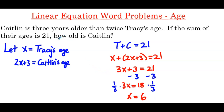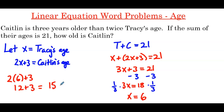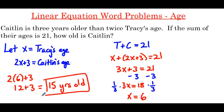Re-reading the problem, they ask how old is Caitlin — they only want Caitlin's age. Substituting 6 into x: 2 times 6 plus 3 is 12 plus 3, so Caitlin is 15 years old. It's always important to re-read the word problem and have a well-defined let statement so we know x is Tracy's age and 2x plus 3 is Caitlin's age.